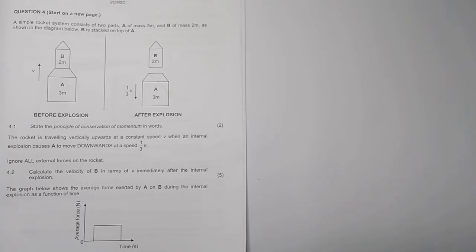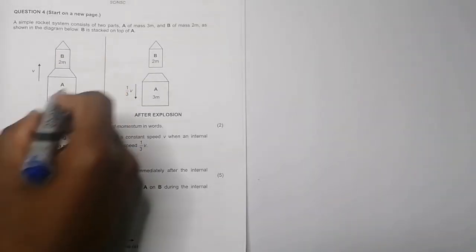They say the rocket is traveling vertically upwards at a constant speed v when an internal explosion causes A to move downwards at a speed of one-third v. They say ignore all external forces on the rocket. Calculate the velocity of B in terms of v immediately after the internal explosion.